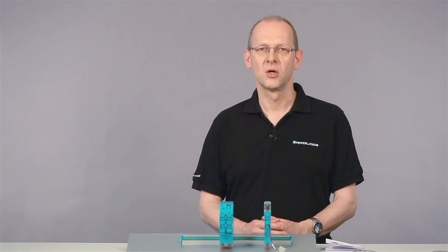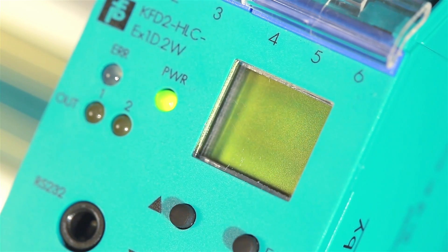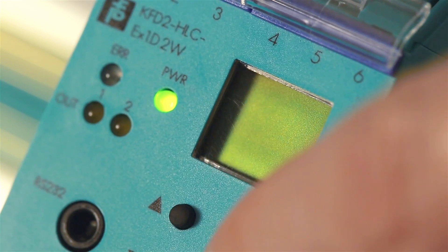Then we configure the output characteristics. Again navigate to the corresponding menu item using the cursor keys, confirm with OK, and select the required characteristics. In our case, it's 4-20 NE43.